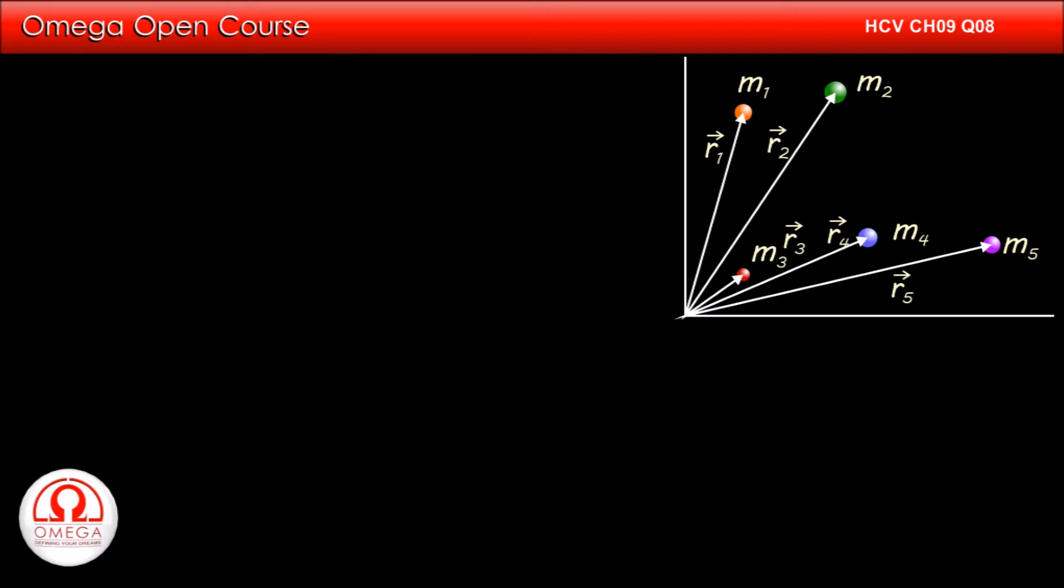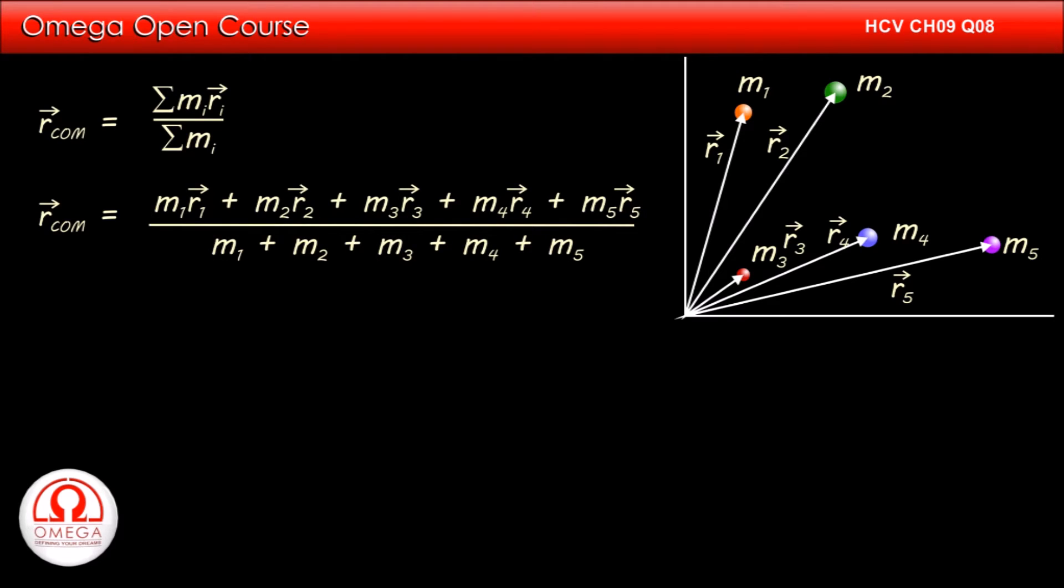Now the position of center of mass is given by summation of mi into vector ri divided by summation mi. Putting the values we get vector r center of mass is equal to m1 vector r1 plus m2 vector r2 plus m3 vector r3 plus m4 vector r4 plus m5 vector r5 divided by m1 plus m2 plus m3 plus m4 plus m5.